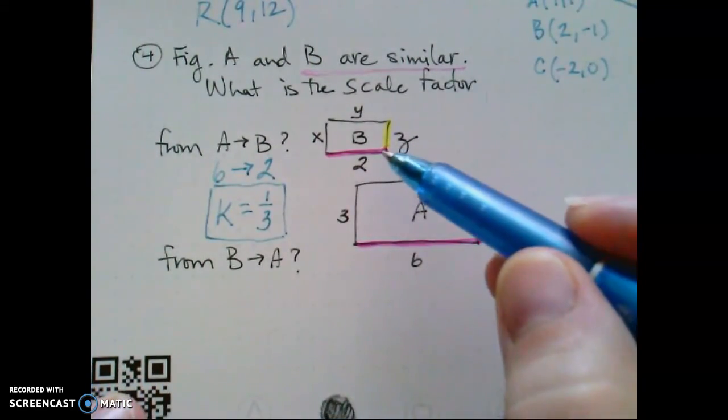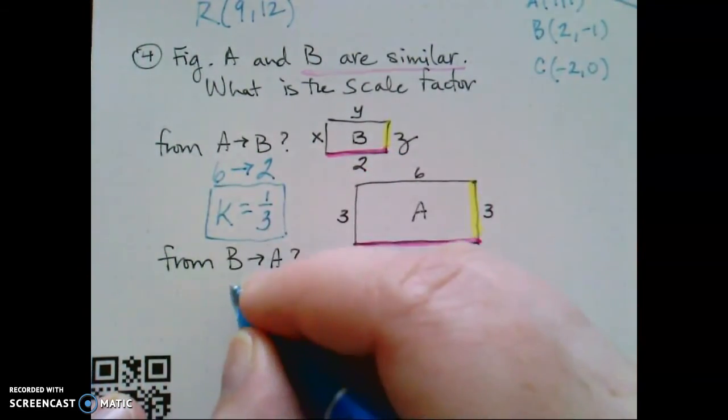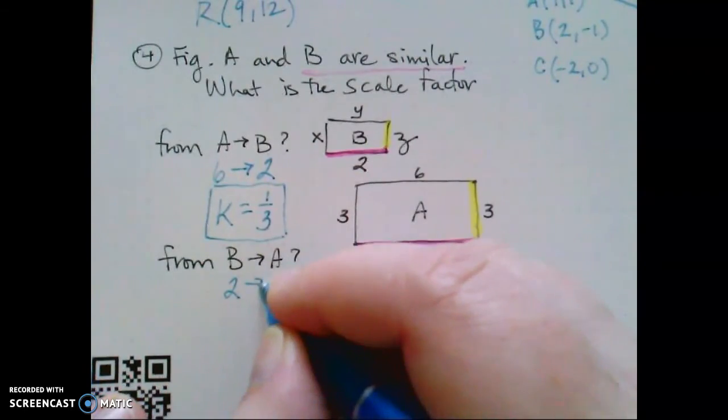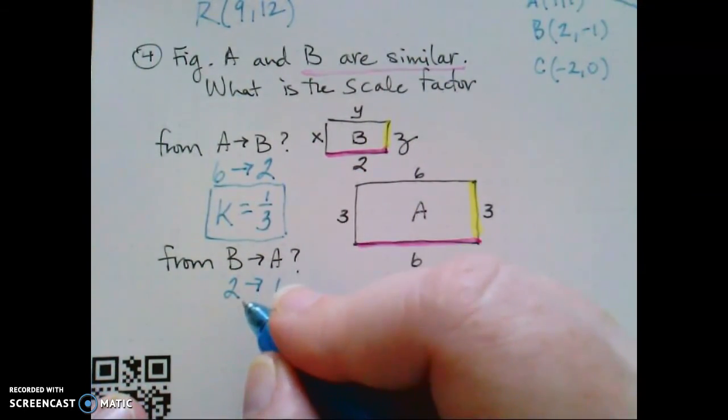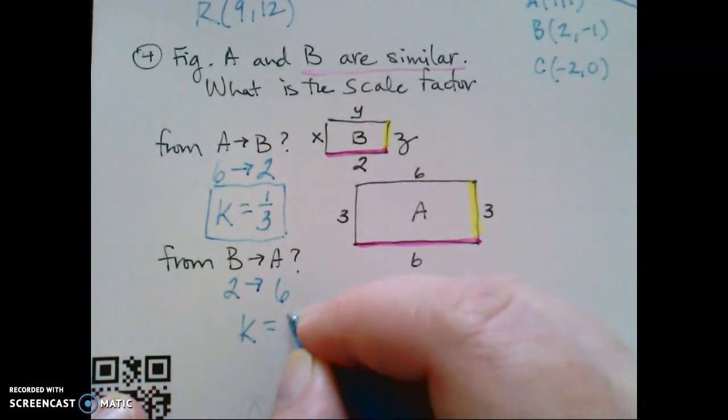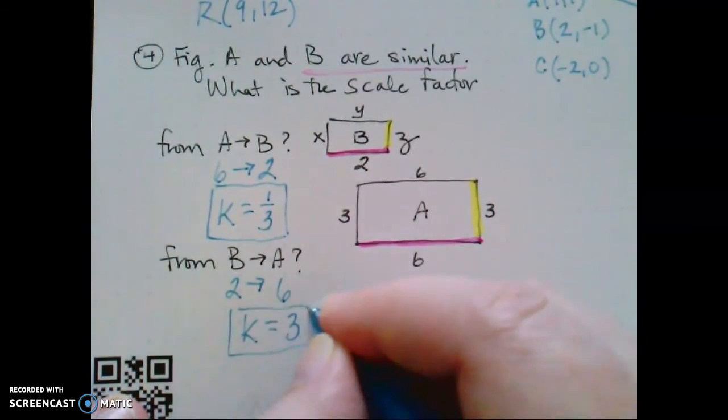But if I switch that order and I'm going from figure B to figure A, then that means a side length of 2 has to become a side length of 6. And so mathematically, the only way to do that is to multiply 2 times 3 to get 6. So here the scale factor is a positive 3.